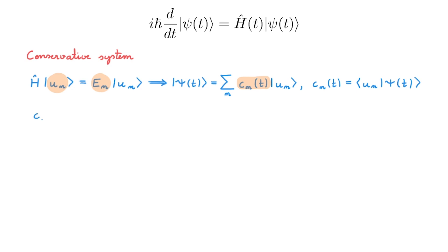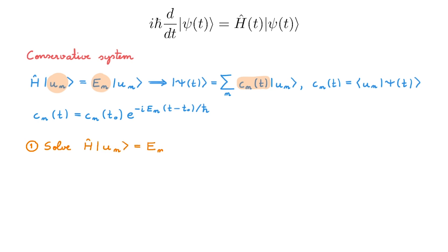Let's make some room and copy the final expression we got for the time-dependent C_n. With this result, the time dependence of the Schrödinger equation for conservative systems is always the same, and we only need to follow this recipe. The first step is to find the energy basis in which we want to solve the problem. To do that, we have to solve the eigenvalue equation for the Hamiltonian to find the energy eigenvalues and eigenstates, and these eigenstates provide the energy basis.